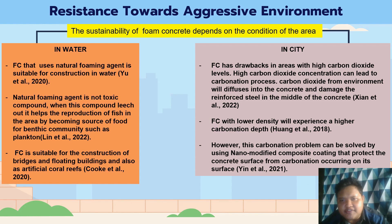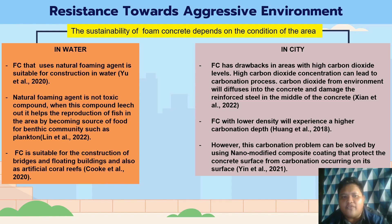Now we look at resistance to aggressive environments. The sustainability of foam concrete depends on the conditions of the area. In water, researchers state that foam concrete using a natural foaming agent is suitable for construction because the natural foaming agent is a non-toxic compound that supports the reproduction of fish by becoming a food source for aquatic communities. In urban areas, foam concrete has a drawback in areas with high carbon dioxide levels, as CO₂ from the environment can diffuse into the concrete and corrode the reinforcing steel. However, researchers have proposed a solution using a nano-modified composite coating to protect the surface from carbonation on the foam concrete surface.